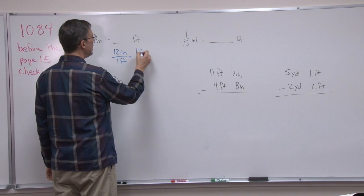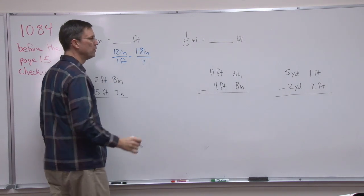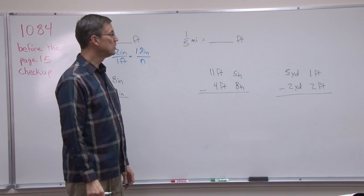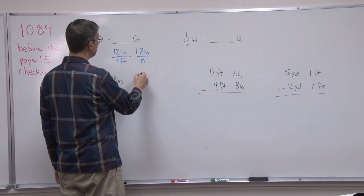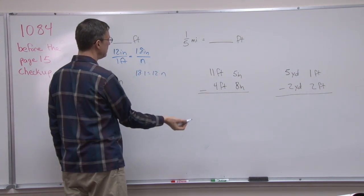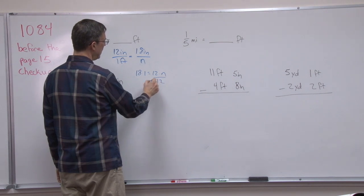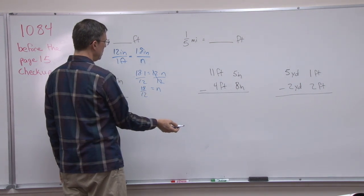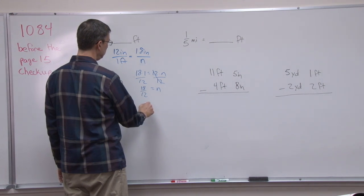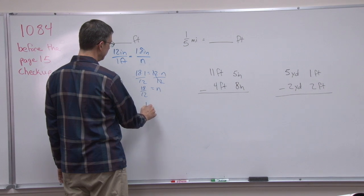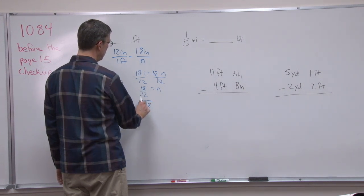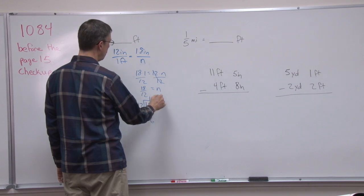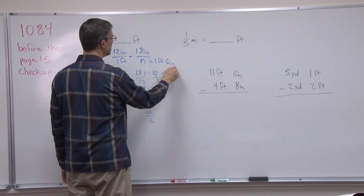Now we're going to take the 18 inches and put that up here. And this is what we're solving for. I think in the PACE they use N to represent the unknown number. And then we solve by cross-multiplying. So 18 times 1 equals 12 times N. And now I can divide both sides by 12. And so N equals 18 twelfths, which would be 1 with 6 inches left over. If we divided the 18 by 12, like this, you would get 1 and 6 left over. So that means we have 1 foot and 6 inches.